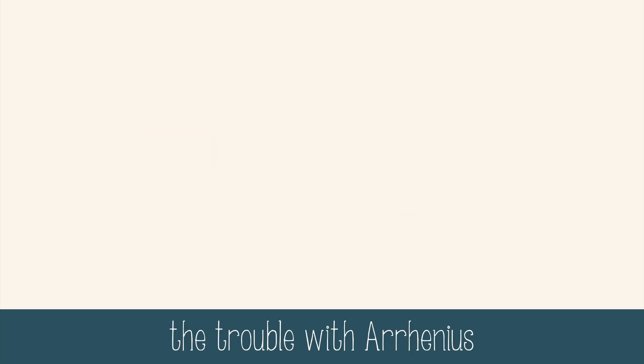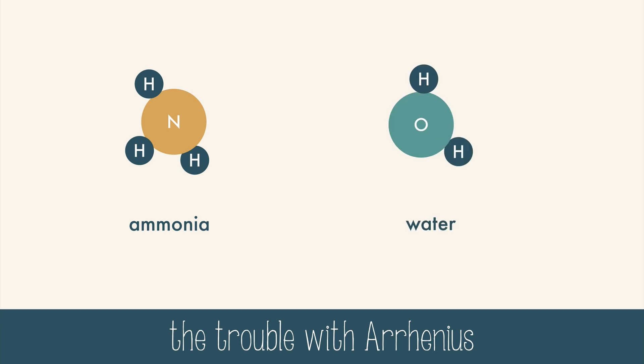The Arrhenius definition, it turns out, is too confining for all acids and bases. For example, ammonia is basic, but there's no hydroxide on ammonia. In the presence of water, however, it will react to produce hydroxide from the water molecule.